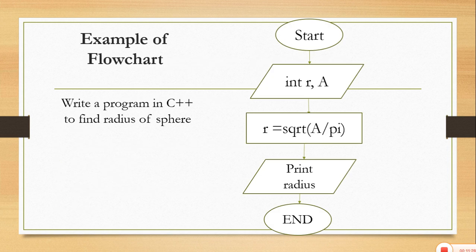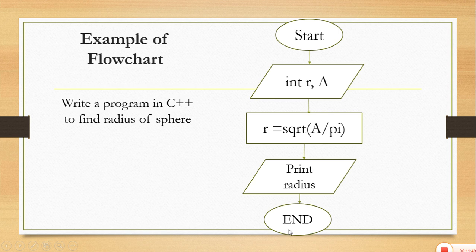This algorithm can be represented in the form of a flowchart. First step: start. Second step: initialization of two variables. Third step: the processing assignment statement. Fourth step: printing the radius value. And lastly: end of the program. This is the flowchart for the program in which we can find the radius of the sphere.